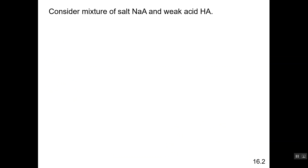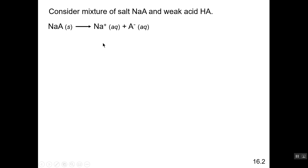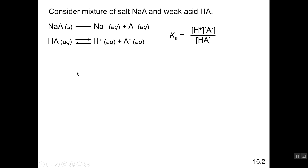Now let's look at the resulting pH of a solution of a weak acid — this could be acetic acid or any other weak acid. We'll use a generic formula HA and the sodium salt of that acid. The salt dissociates completely while the weak acid dissociates partially. We write the Ka expression — the dissociation constant expression for the weak acid — and rearrange it so that the concentration of H⁺ equals Ka times the concentration of HA divided by A⁻.